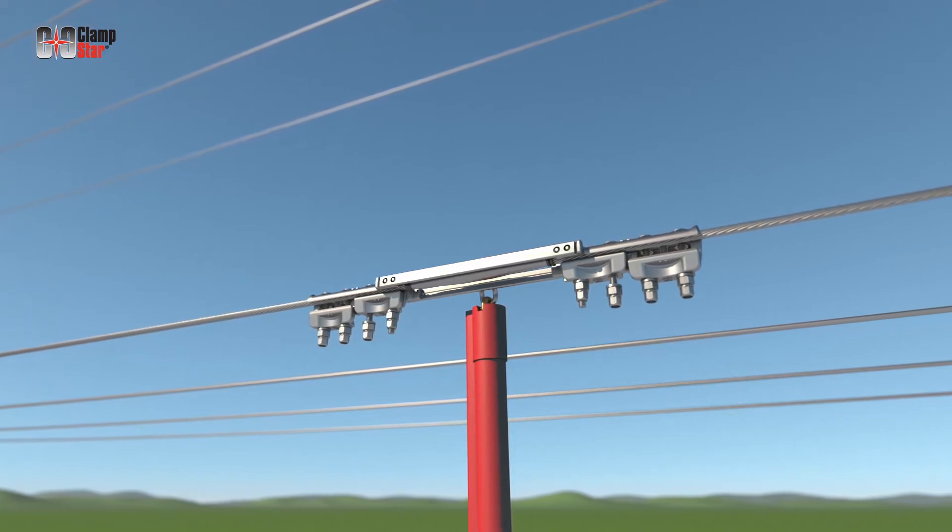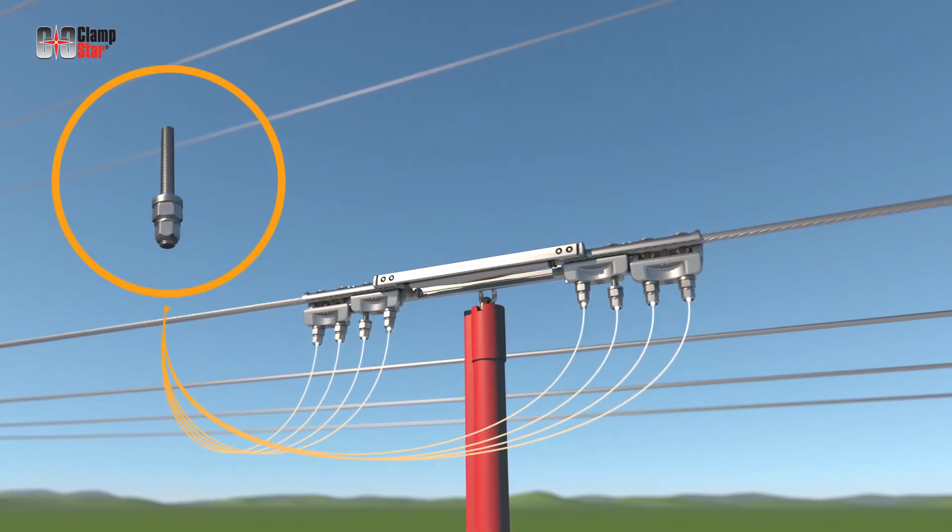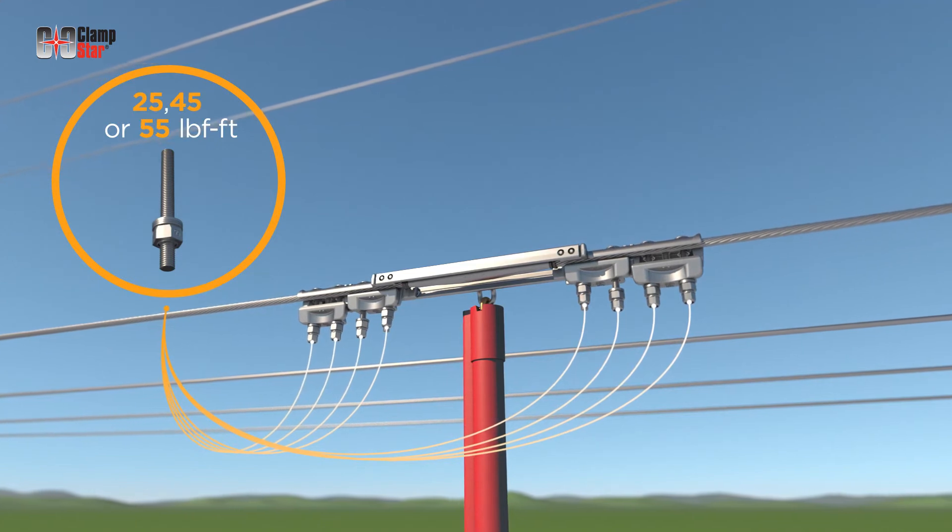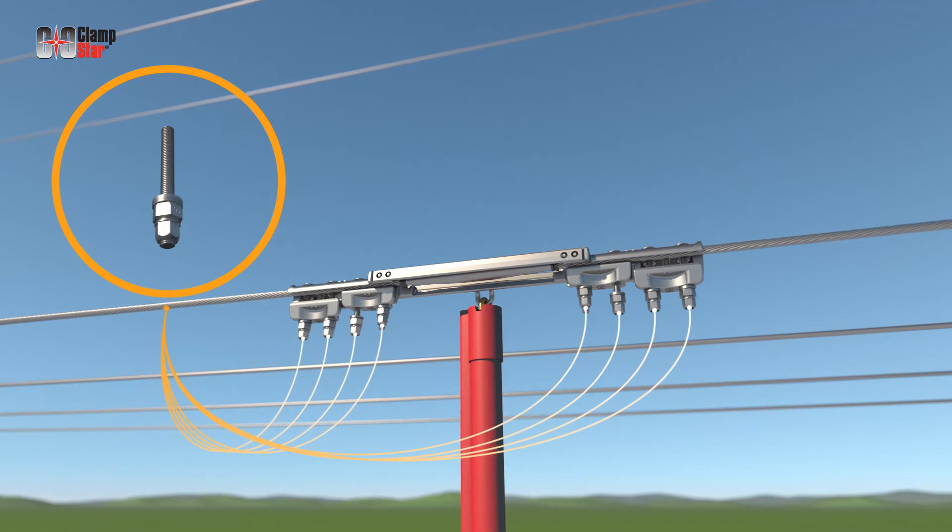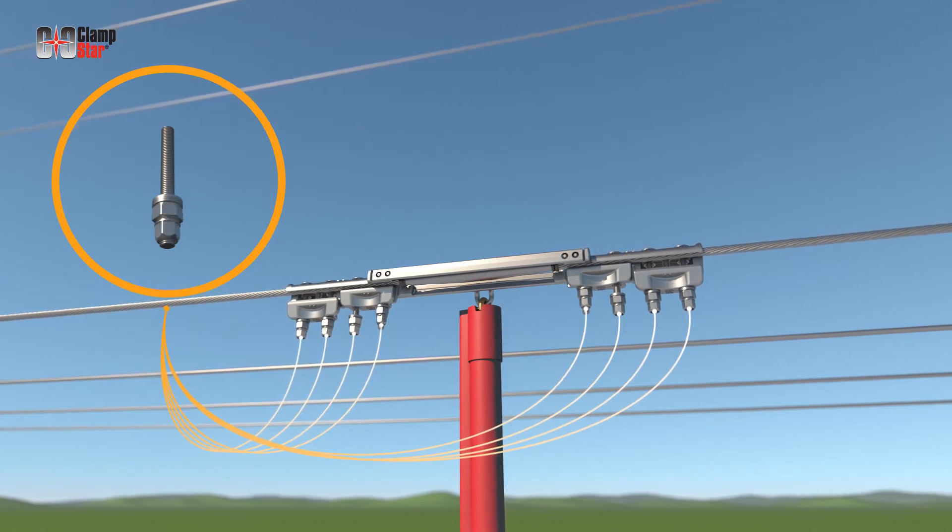Distribution class ClampStar units are supplied with unique nuts designed to shear at the appropriate torque level. The torque limiting nut negates the need for a torque wrench and assures that proper fastener torque is achieved.